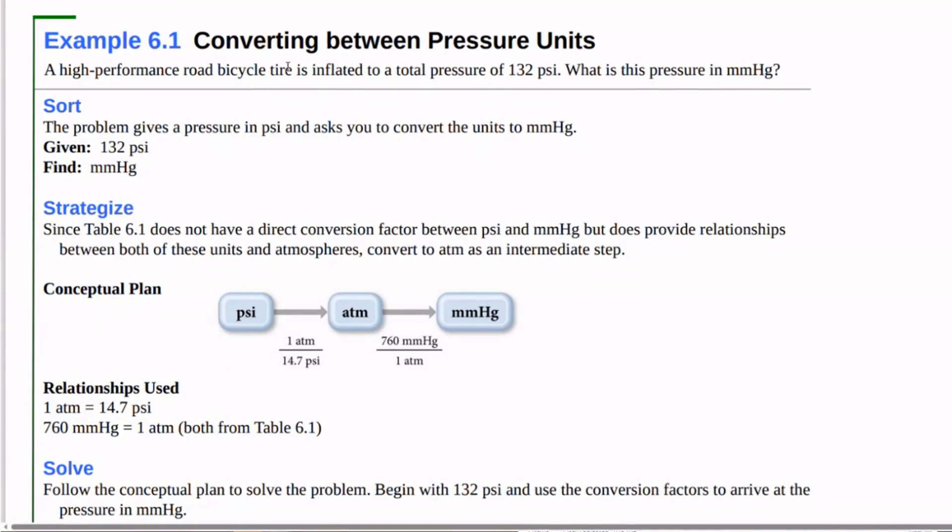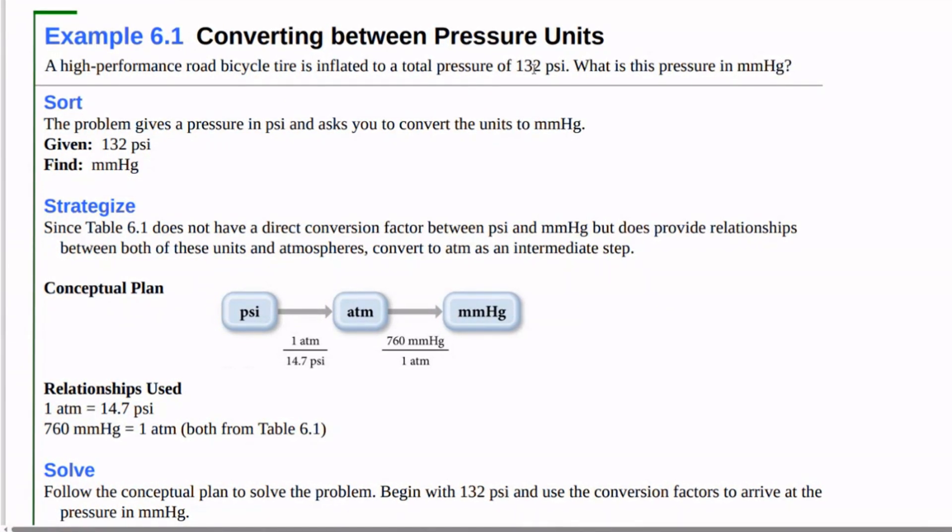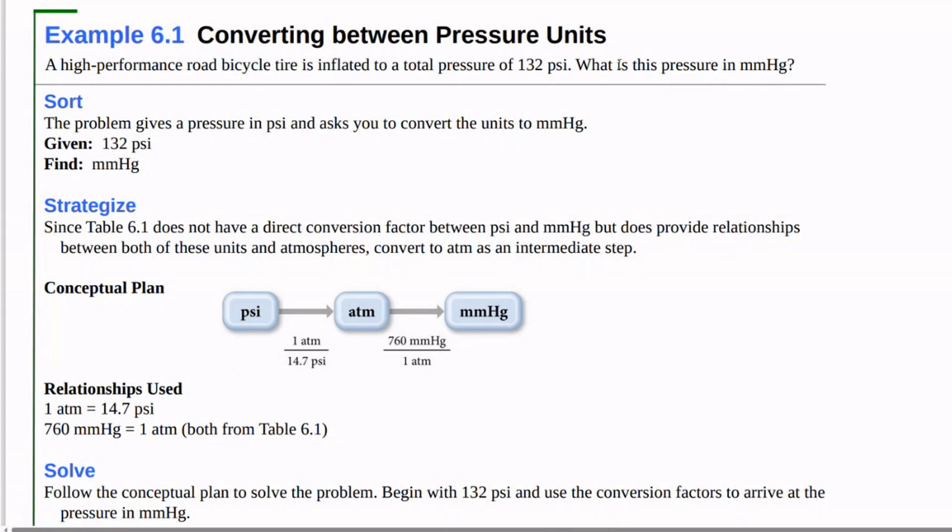A high-performance road bicycle tire is inflated to a total pressure of 132 PSI. What is this pressure in millimeters of mercury? So we need to convert PSI to millimeters of mercury.